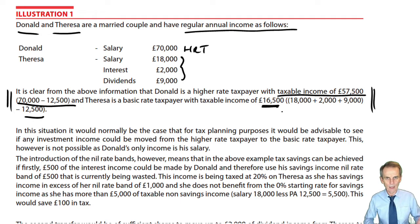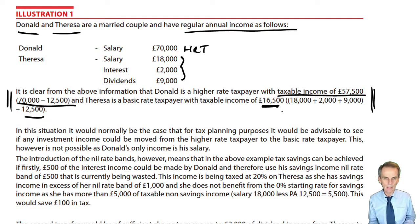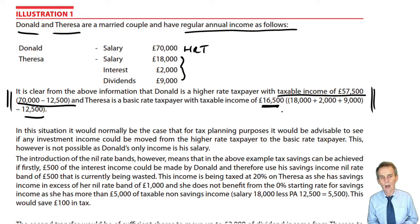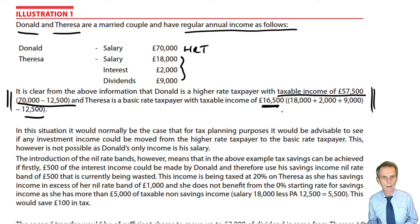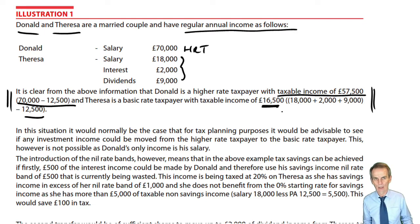That would mean setting up a separate account in the name of Donald. If we have joint income it's just split 50-50, and we may not want to do that. For a higher rate taxpayer such as Donald, we've only got £500 savings income nil rate band, and we don't want to end up paying higher rate tax on the savings income. We're looking to take advantage of that savings income nil rate band — as Donald is a higher rate taxpayer, that would only be £500.